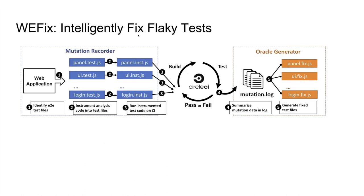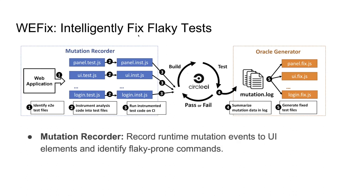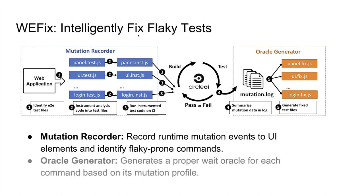Here's a summary of our tool called WeFix. On the left is the mutation recorder, which records the runtime mutation events to UI elements and identifies flakiness-prone commands. On the right is the oracle generator, which generates a proper wait oracle or expected condition for each command based on its mutation profile captured by the mutation recorder.